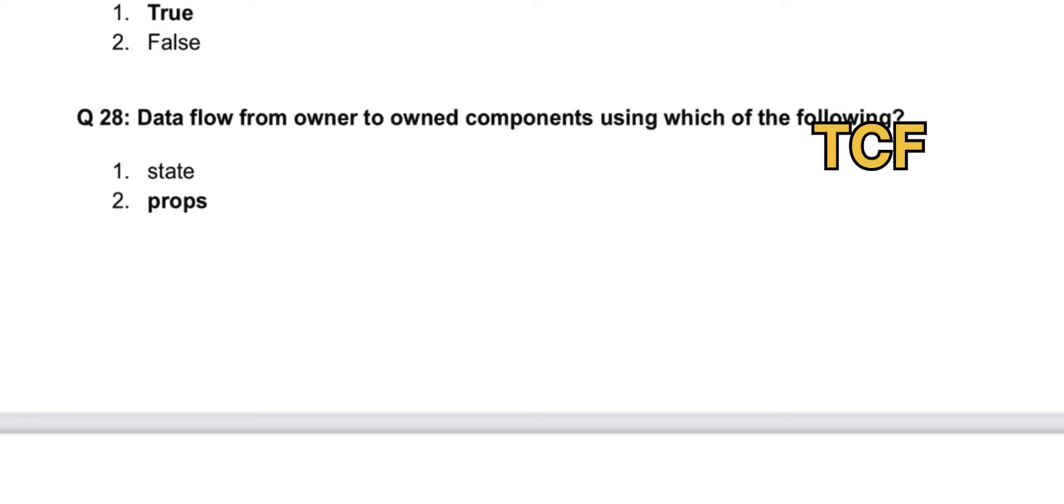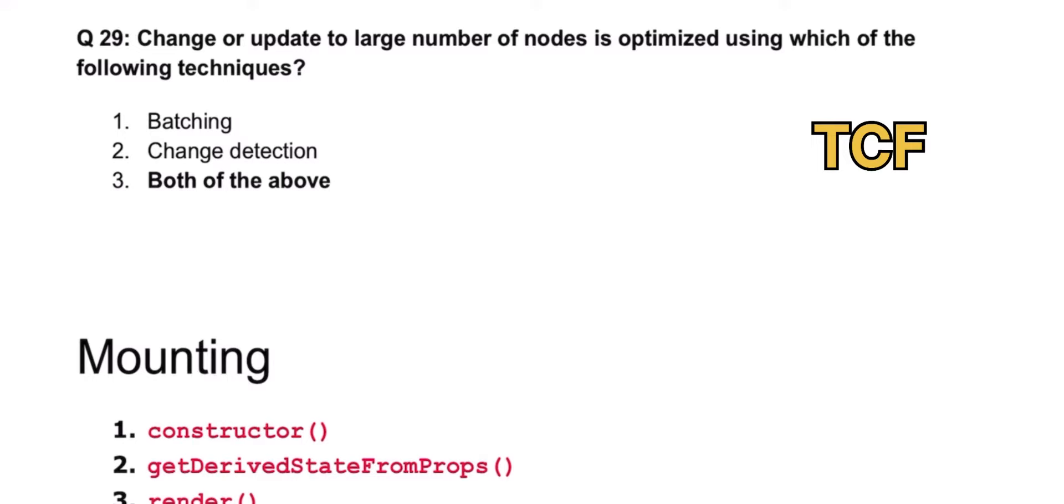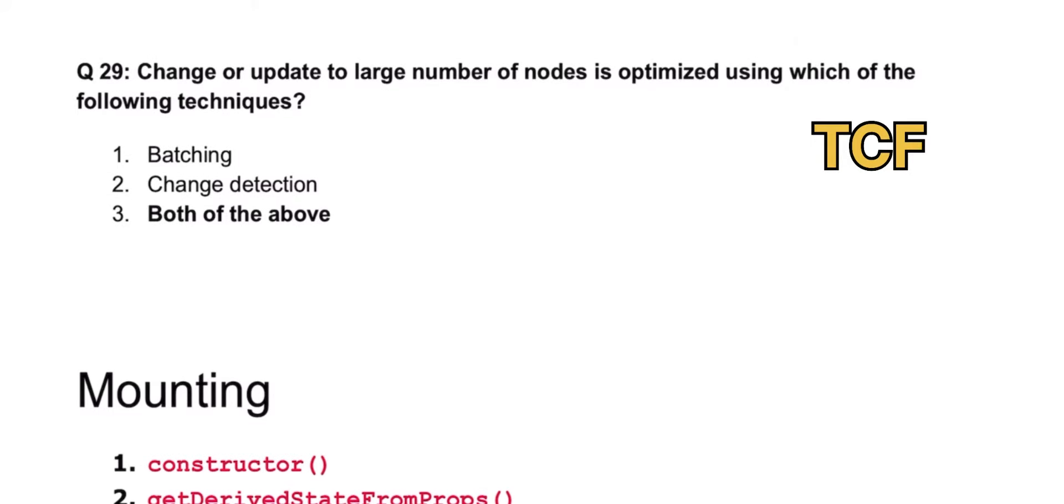The data flow from owner to owned component using which of the following? That is props. Changes or updates to large number of nodes is optimized using which of the following technique? That is both of the above - batching and change detection.